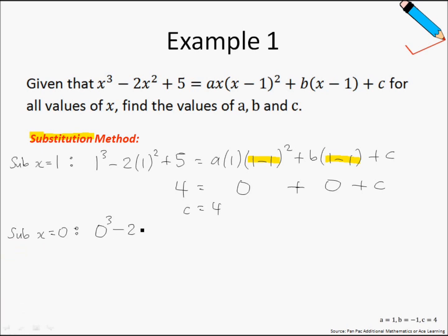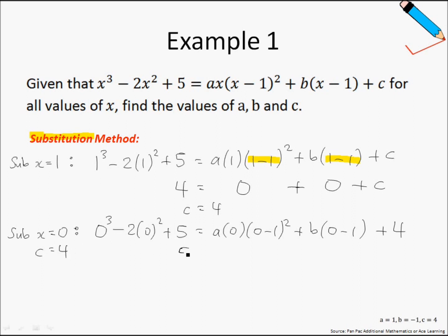Substituting x equals 0: 0 cubed minus 2 times 0 squared plus 5 equals a times 0 times (0 minus 1) squared plus b times (0 minus 1) plus c. We already found c equals 4, so substituting that in, we have 5 equals negative b plus 4 on the right-hand side. Solving this, b equals 4 minus 5, which is negative 1.